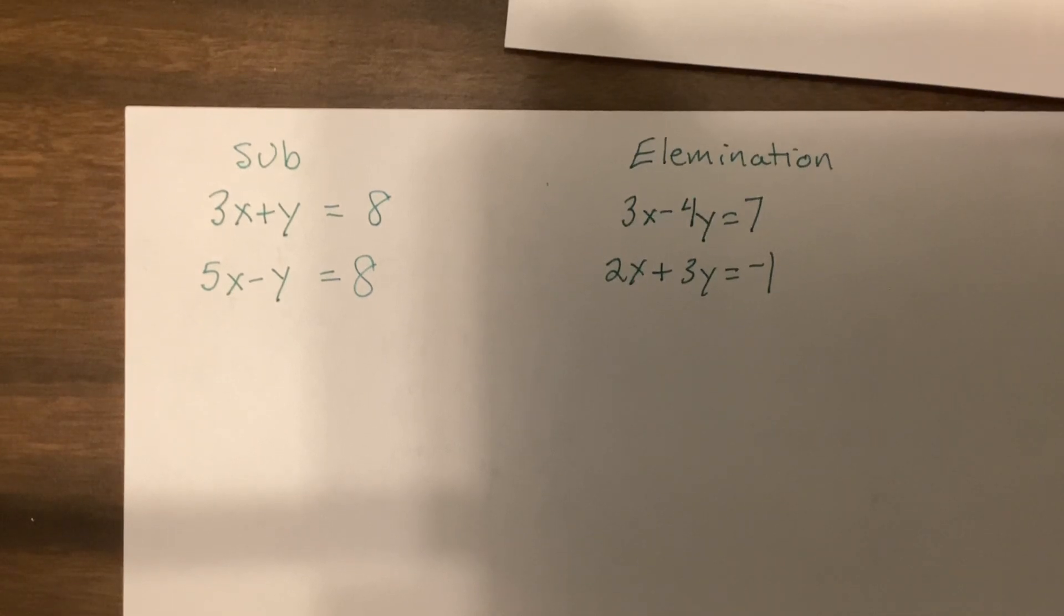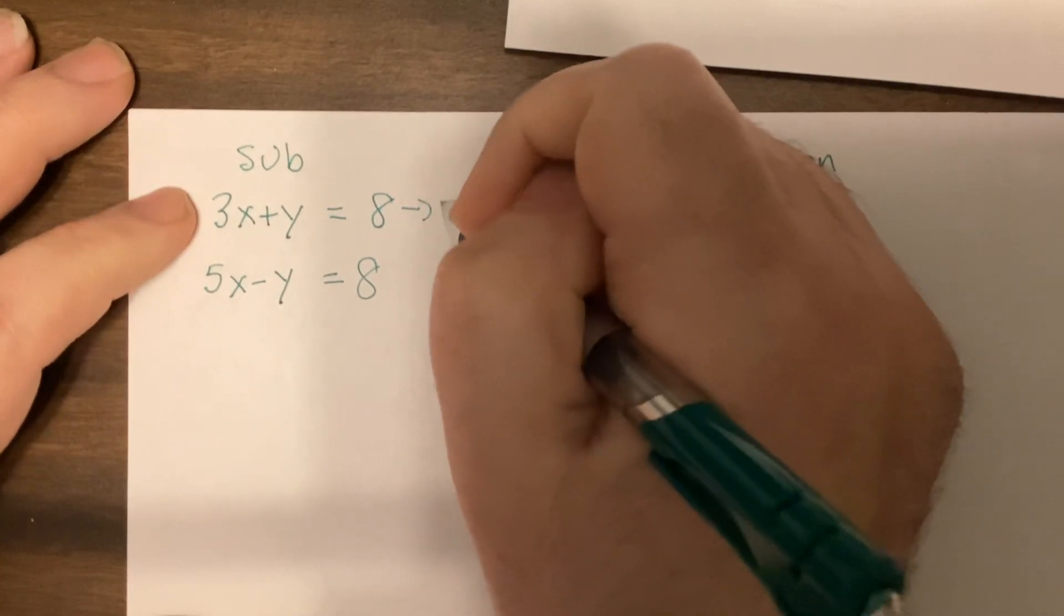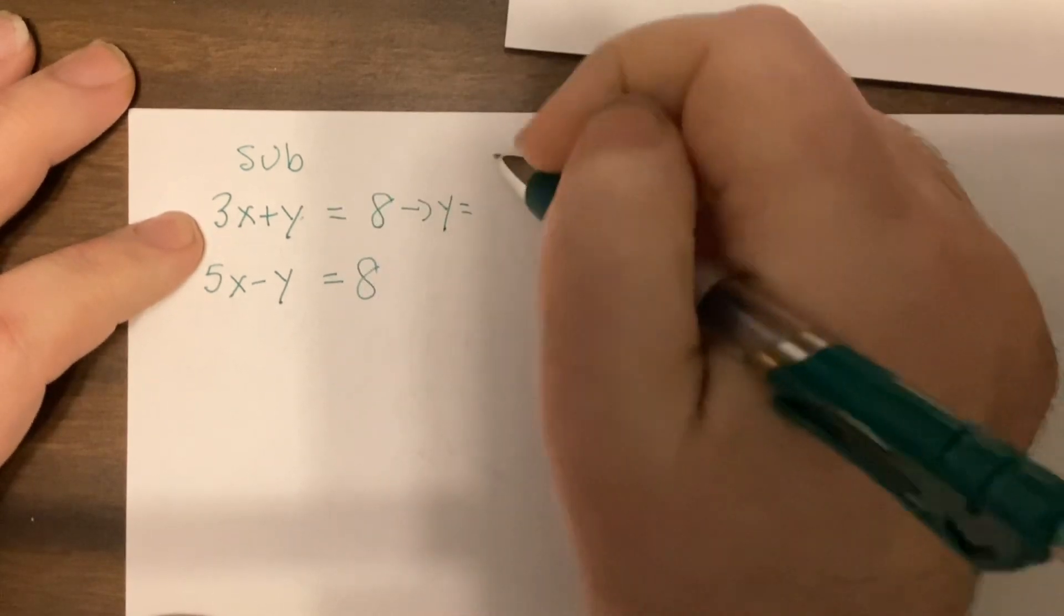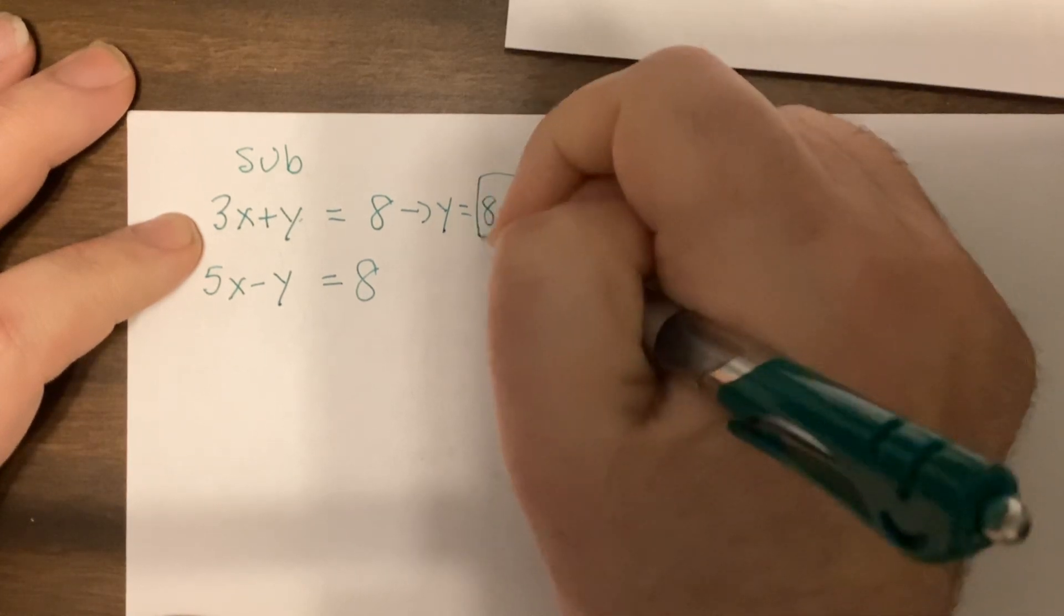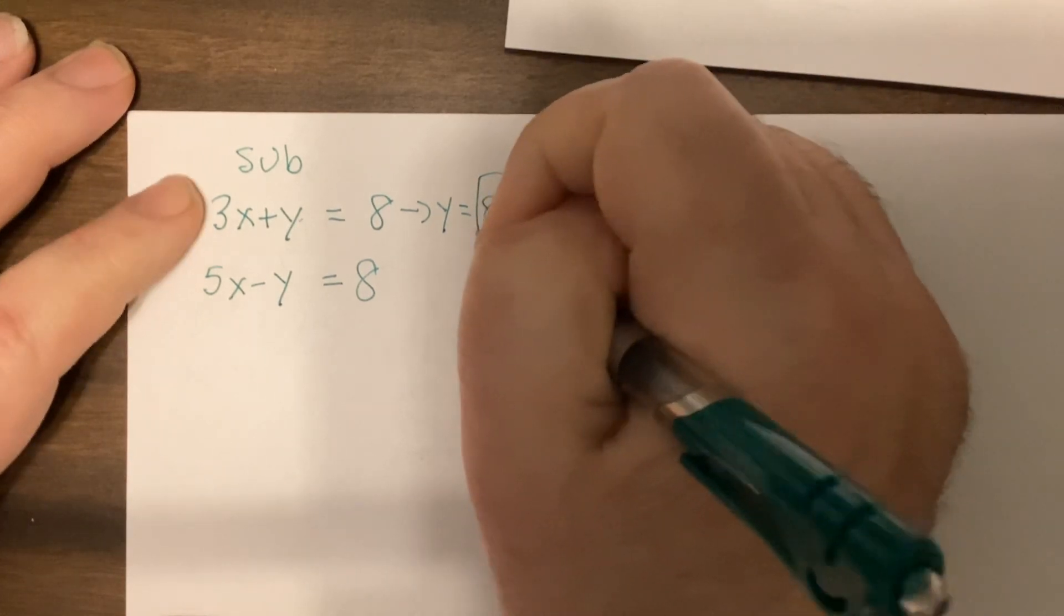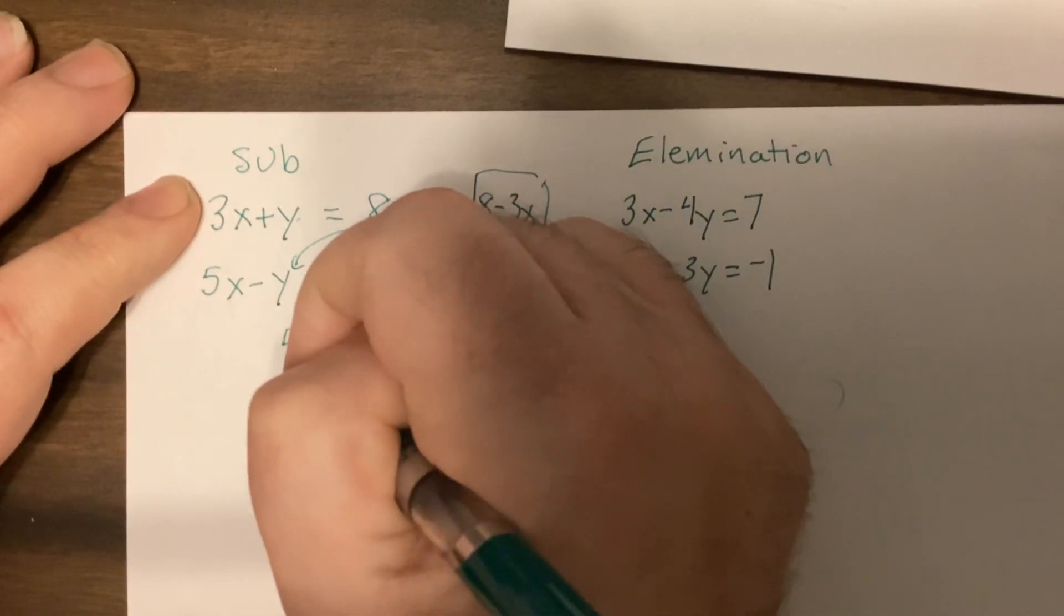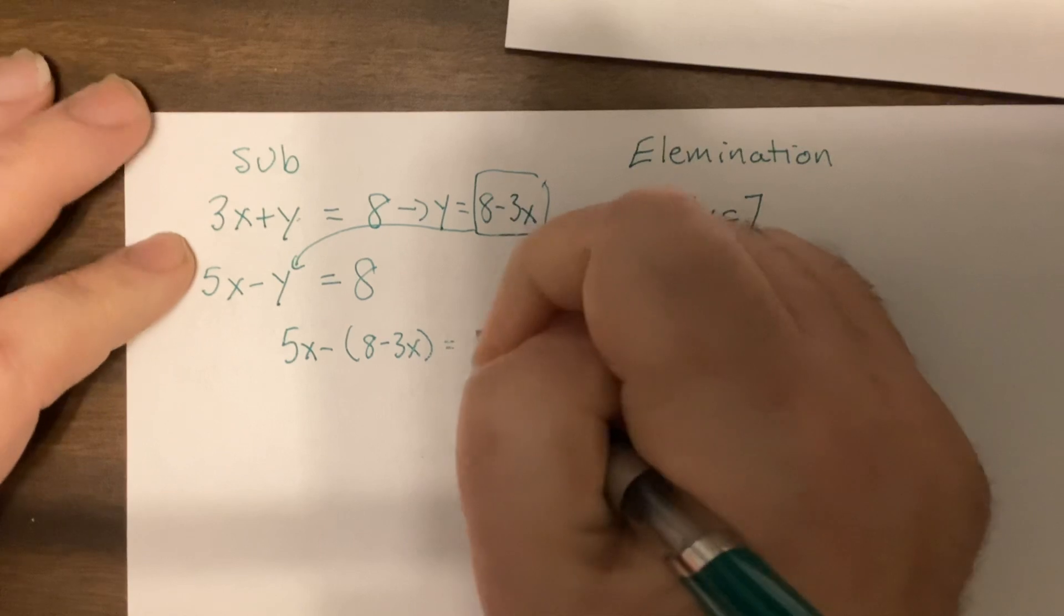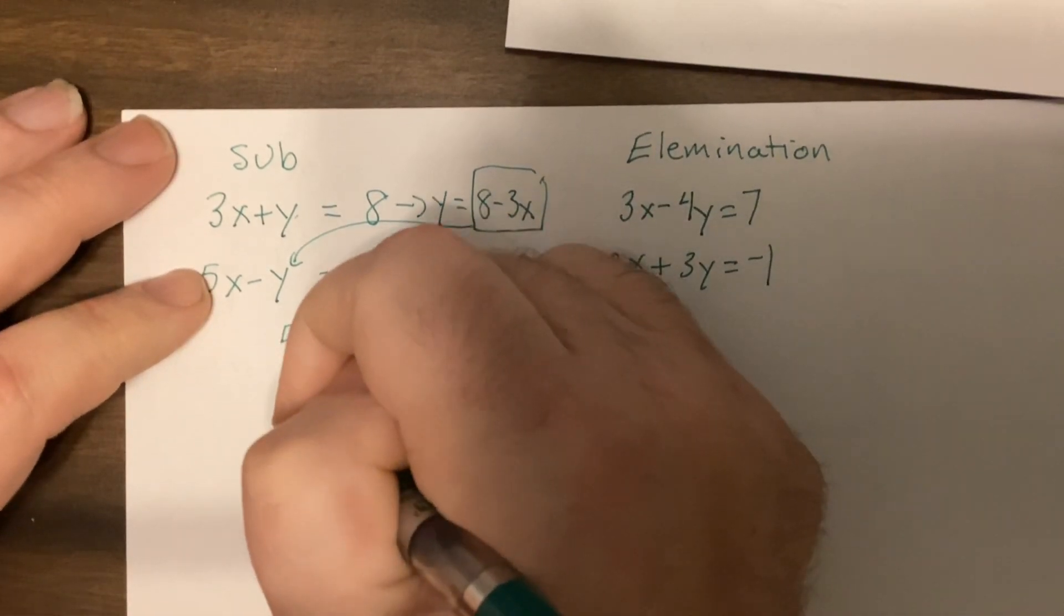Okay, so I'm going to solve one variable for one equation. So I'm going to solve this equation for y. So y equals 8 minus 3x. Then I'm going to take this and put it into the other equation for y. So it'd be 5x minus 8 minus 3x equals 8. So 5x minus 8 plus 3x equals 8.